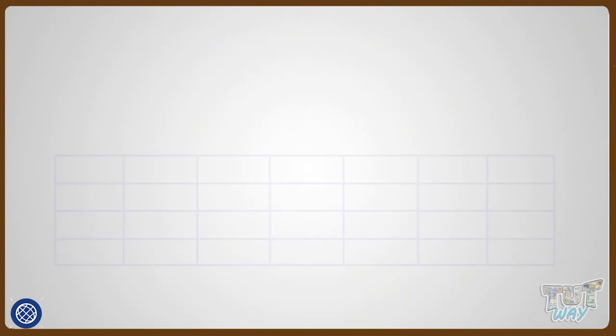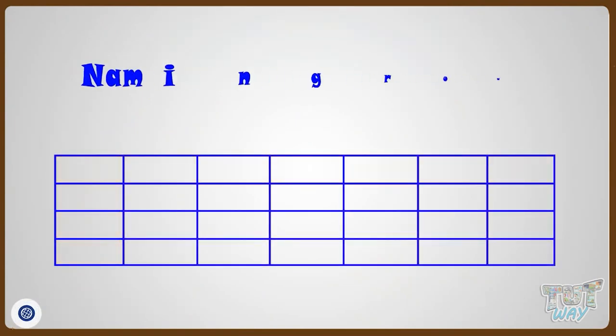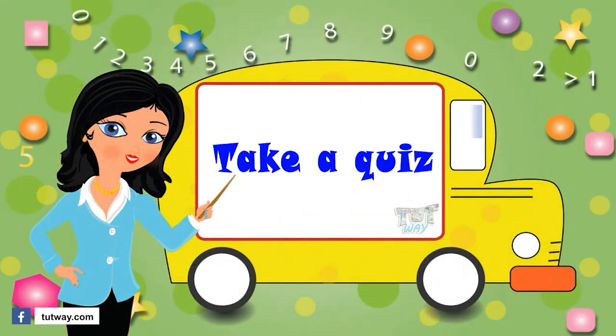So kids, now you know what are grids, what are columns and rows, and how to name the locations in a grid. Now go ahead and take a quiz to learn and practice more. Bye bye!